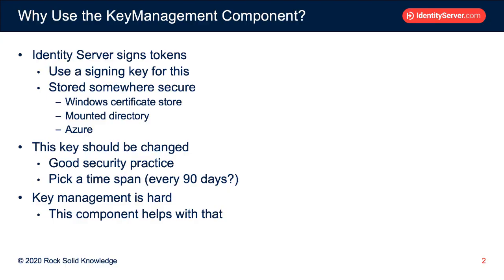You're using identity server, and identity server generates tokens and signs those tokens so we can check them for correctness. For this it uses a signing key, and this key has to be stored somewhere secure. If you're running locally this could be the Windows certificate store, a mounted directory, or you could be using Azure for storage.